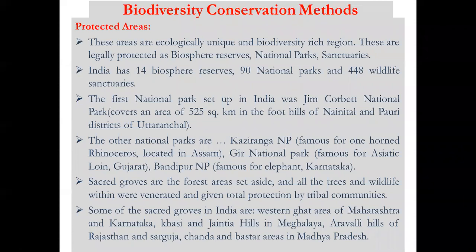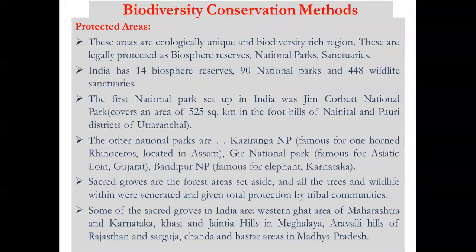Other national parks include Kaziranga National Park in Assam, famous for the one-horned rhinoceros (an endemic species); Gir National Park in Gujarat, famous for the Asiatic lion (also endemic); and Bandipur National Park in Karnataka, famous for elephants. Sacred groves are forest areas protected by tribal communities — groups of trees or small forests set aside where all trees and wildlife within are venerated and given total protection.